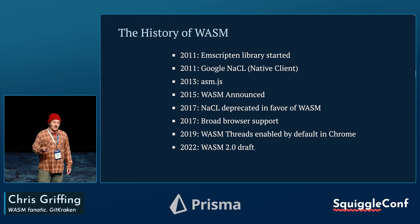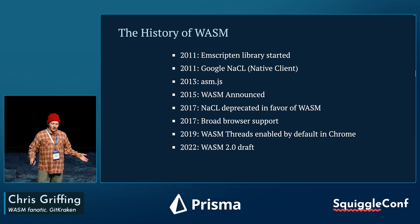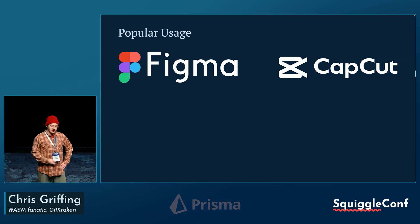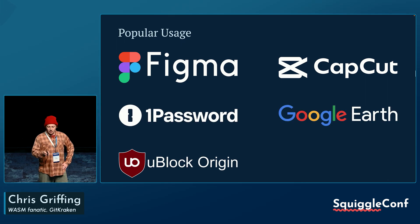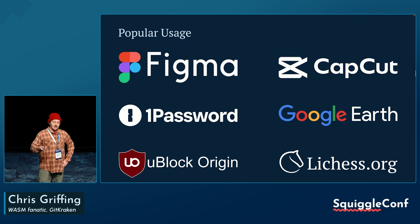The history of Wasm is actually a lot longer than a lot of people think — it goes all the way back to 2011. Popular usage of it: if you're using Figma, you've used it before. If you're using CapCut, 1Password, Google Earth, uBlock Origin, and Lichess — they all use Wasm in some way in the browser.